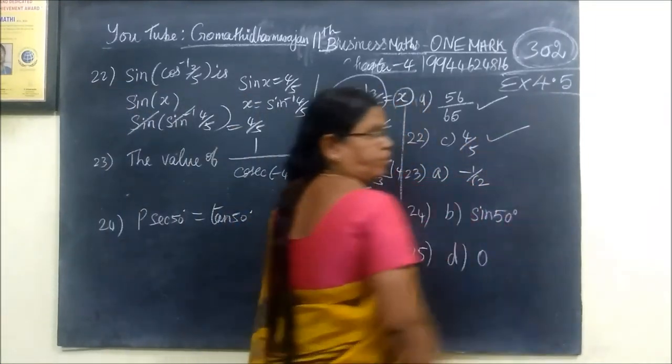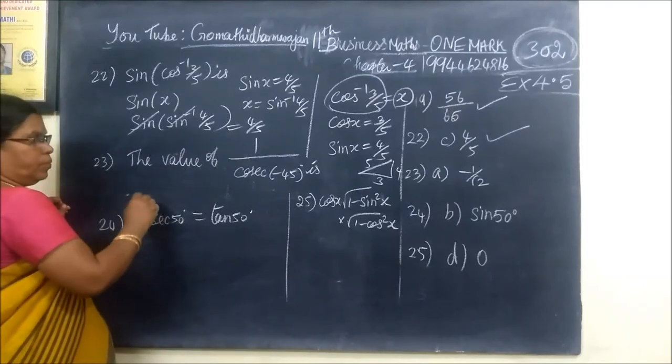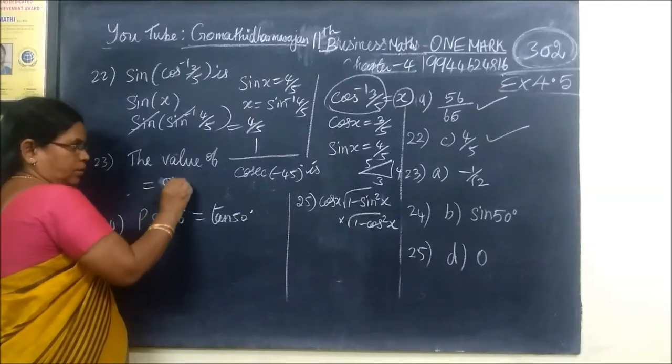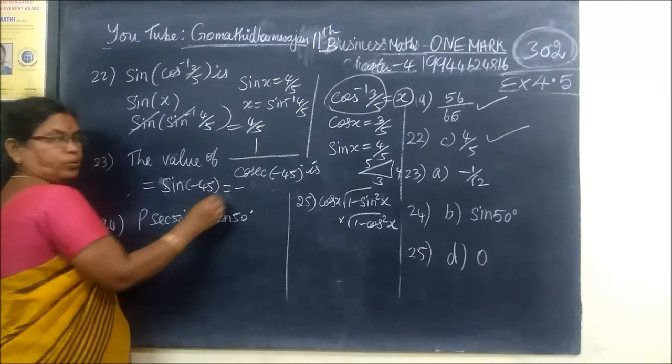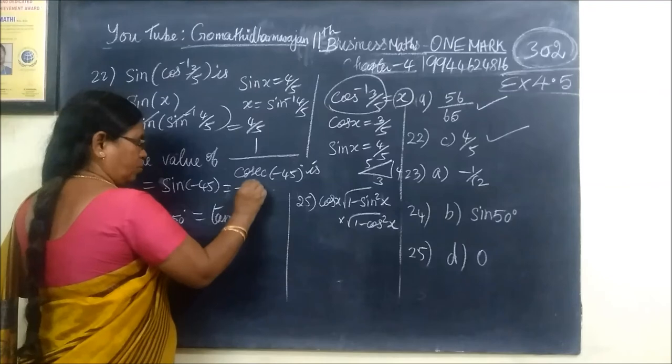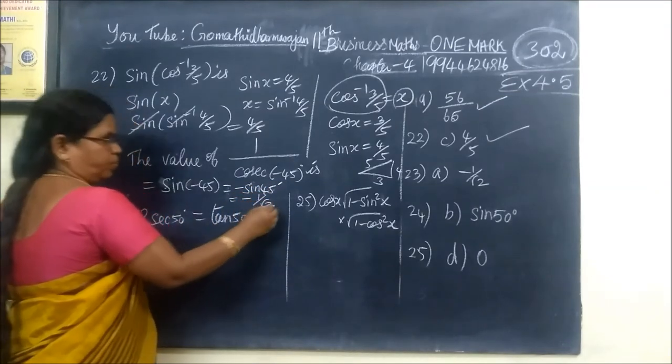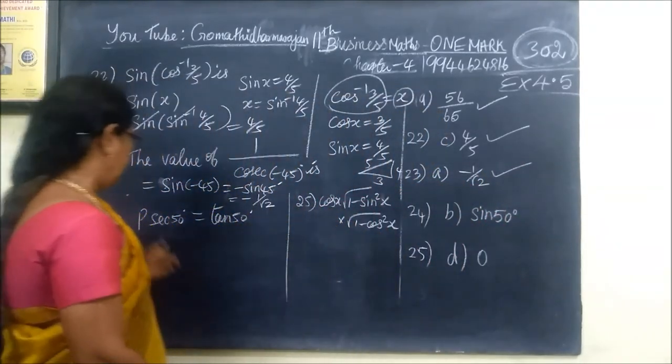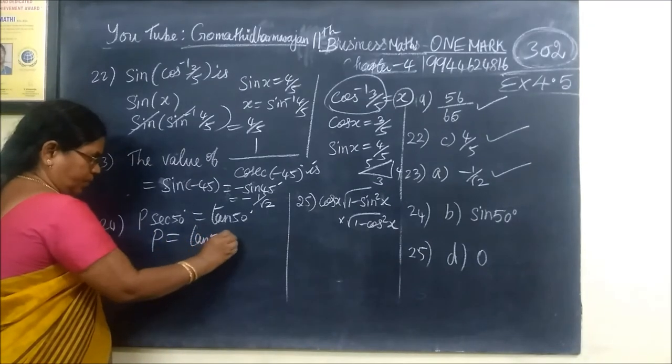1 by cosecant, the value. Sign of minus 45, sign equal to minus 1 minus 0 cos equal to minus 1, so minus sign 45 that is equal to minus 1 by root 2. So here the answer is minus 1 by root 2.